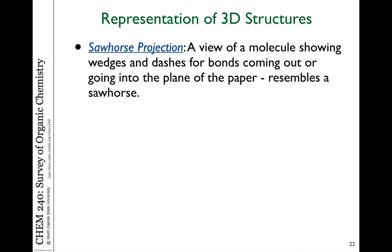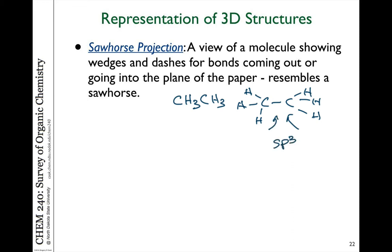A sawhorse projection uses wedges and dashes to indicate which bonds are coming out of or going away from us relative to the plane of the paper. A single line indicates the bond is in the plane of the paper. For example, take the ethane molecule — CH₃CH₃, two carbons each attached to three hydrogens. Each carbon is SP3 hybridized and tetrahedral, so we draw the C-C bond in the plane of the paper, and for each carbon we show two bonds in the plane. This most easily represents the tetrahedral geometry.